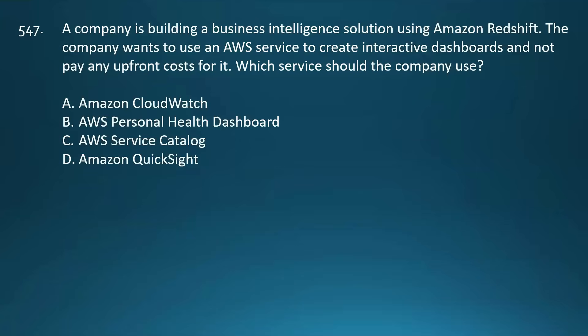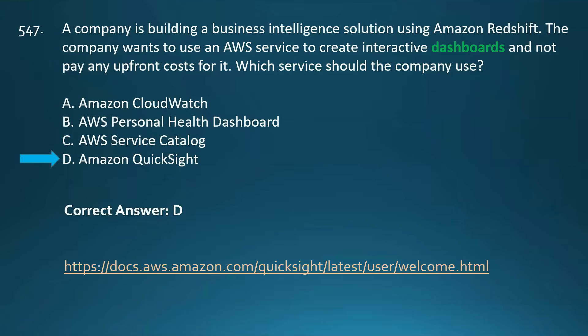Next question: A company is building a business intelligence solution using Amazon Redshift and wants to use an AWS service to create interactive dashboards with no upfront costs. Which service should the company use? Your options are Amazon CloudWatch, AWS Personal Health Dashboard, AWS Service Catalog, or Amazon QuickSight. Whenever you see mention of dashboards in AWS, look for Amazon QuickSight. QuickSight is a business intelligence service that allows you to create interactive dashboards and visualizations, natively connects to Amazon Redshift and other AWS data sources, and you pay only for what you use — meaning no upfront costs.